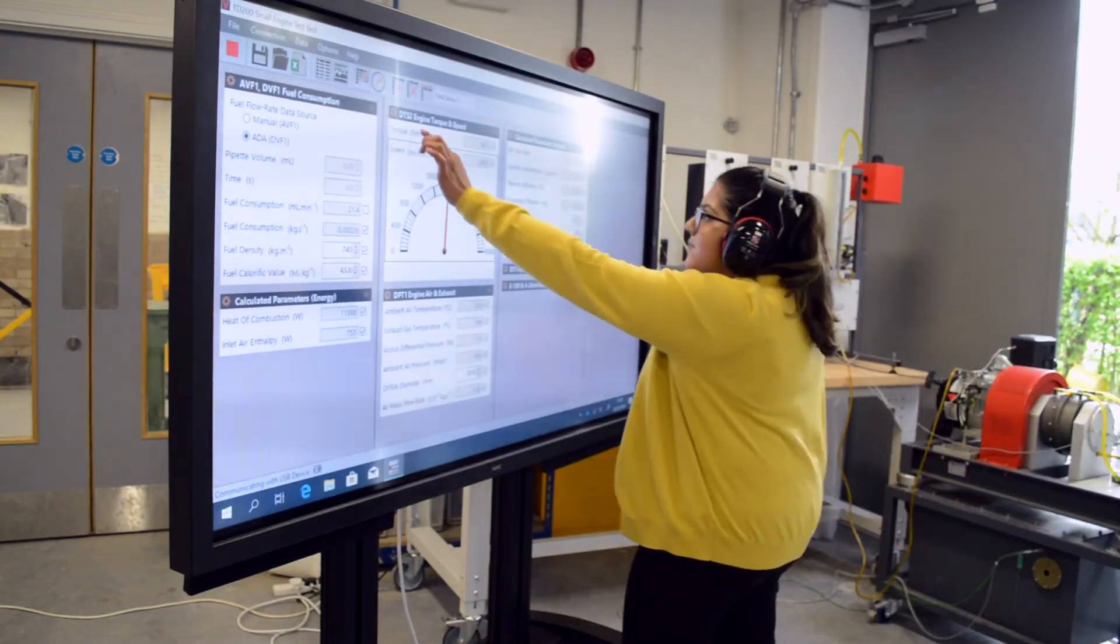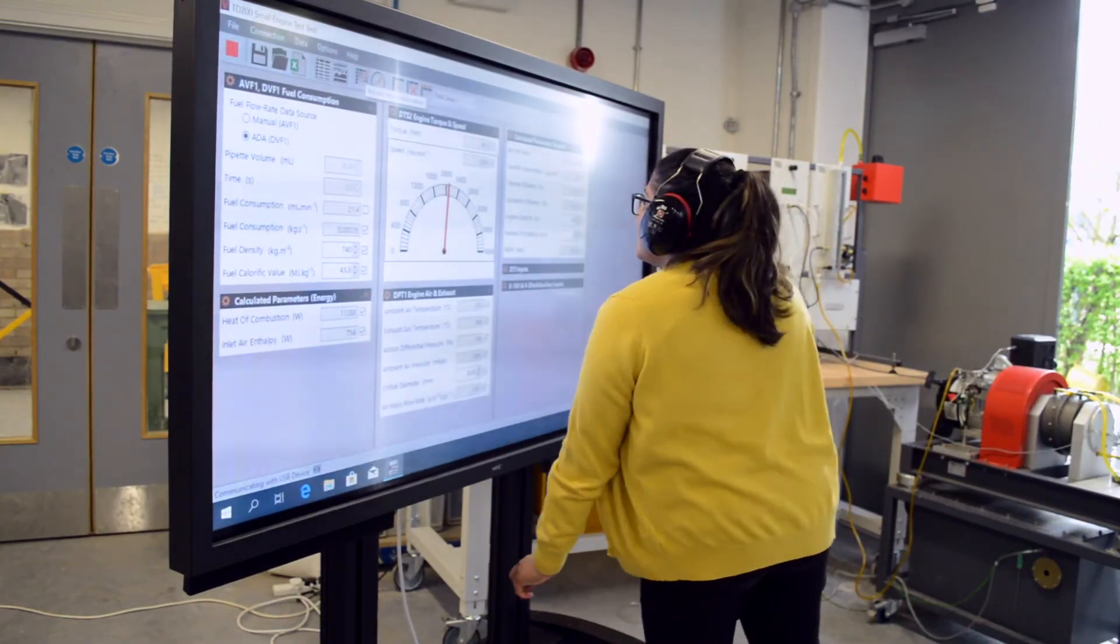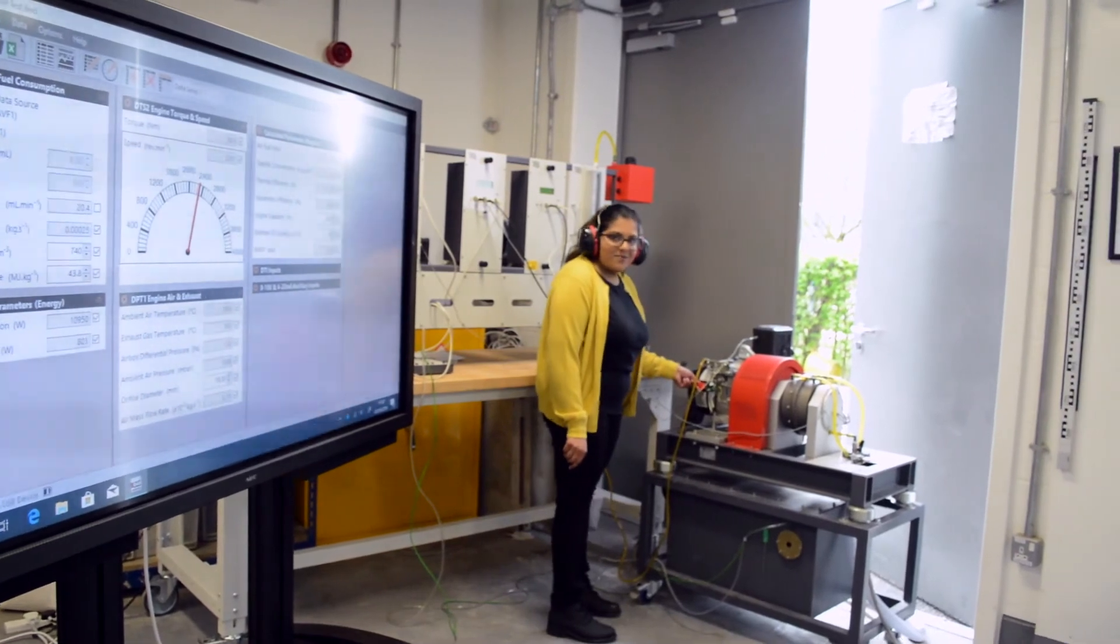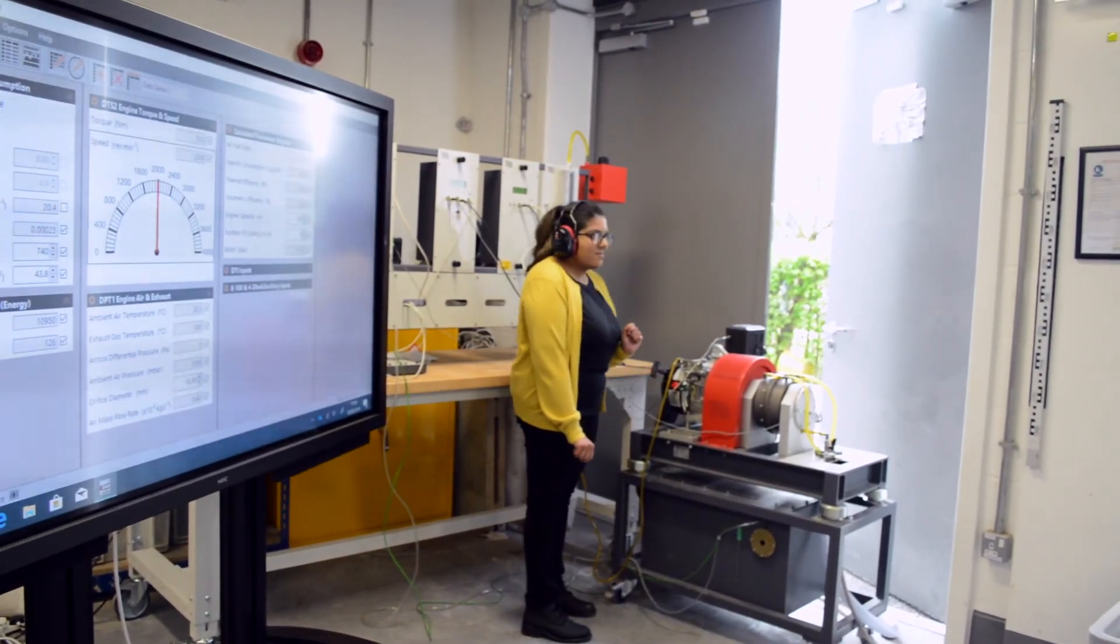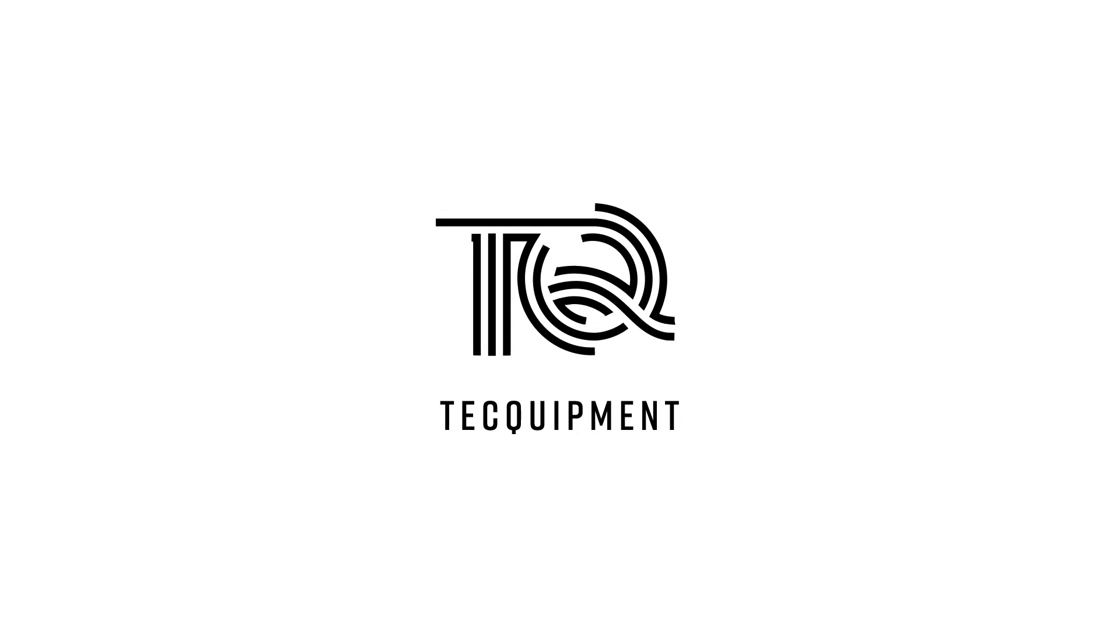I now have a full set of results and I can close the engine down. To do this, all I need to do is twist the switch to off on the engine test set. Thank you for watching this video from Tech Equipment.